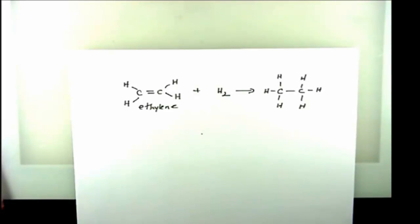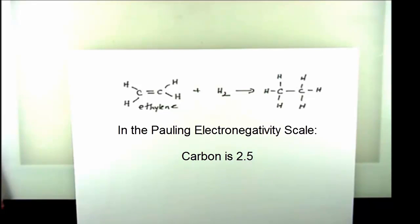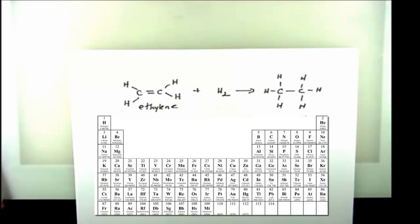If we go back and we think about an earlier lecture, we had this chart of electronegativities here. We have carbon here with an electronegativity of 2.5. Nearly everything to the right of it on the periodic table over to the halogens has a value of 2.5 or greater.